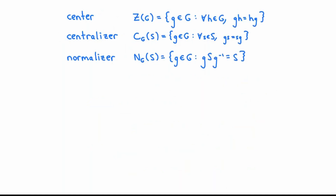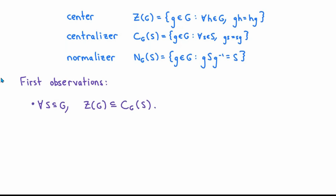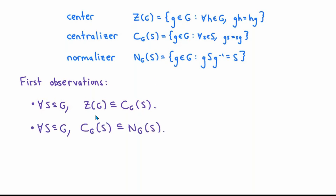Now let's make a few basic observations about these sets. First of all, you may have already noticed that the center of G is always a subset of the centralizer of S in G, because the requirement for g to be an element of the center is that it has to commute with everything in G. So if S is any subset of G and g is any element of the center, it's also definitely going to be an element of the centralizer of S in G. Secondly, it's not difficult to see that for any set S in G, the centralizer of S in G is a subset of the normalizer of S in G.